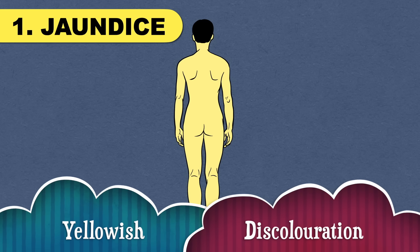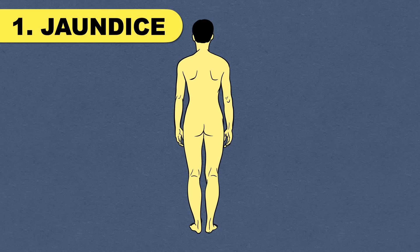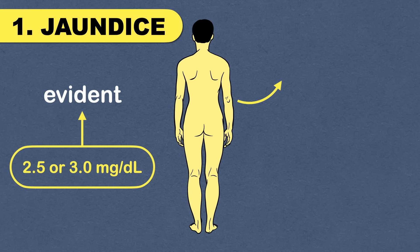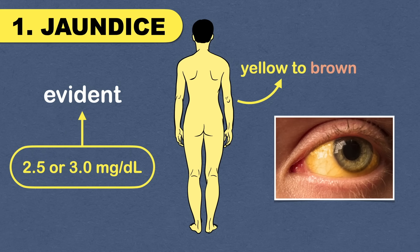Yellowish discoloration of the skin is a typical finding of liver disease. It is evident when the serum level of bilirubin exceeds 2.5 or 3 mg per dL. The color of the skin varies from yellow to brown depending on the amount of bilirubin in the blood. The white portion of the eyes also turns yellow. This skin change is due to excess accumulation of bilirubin under the skin.